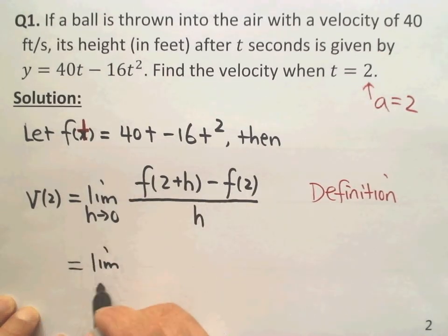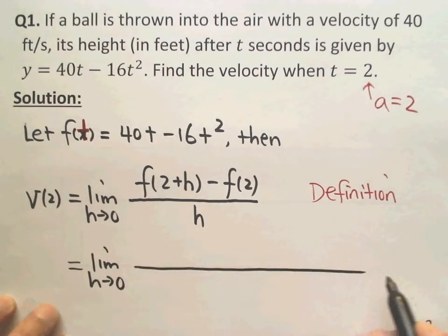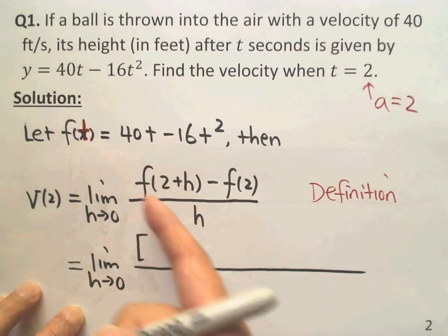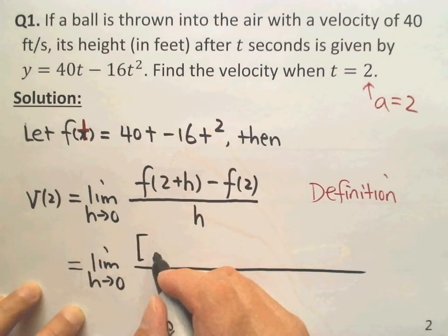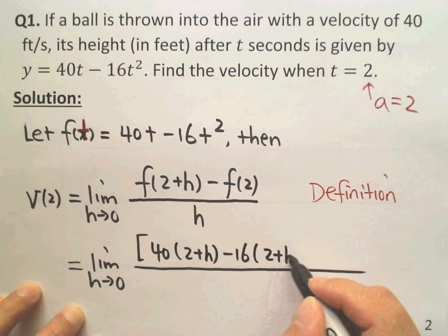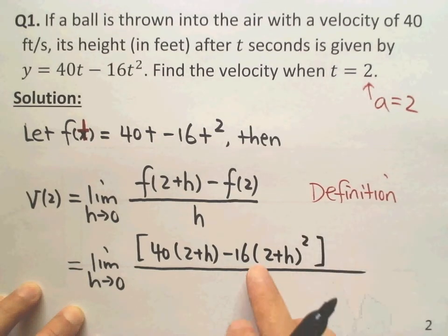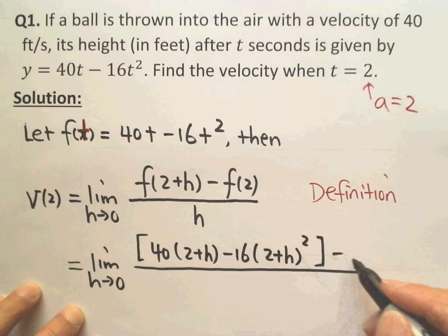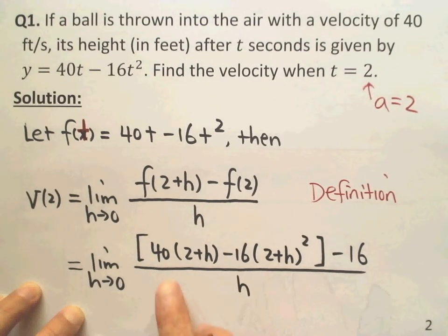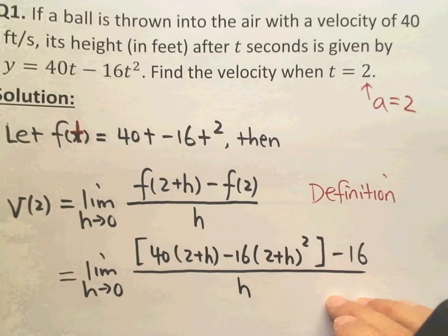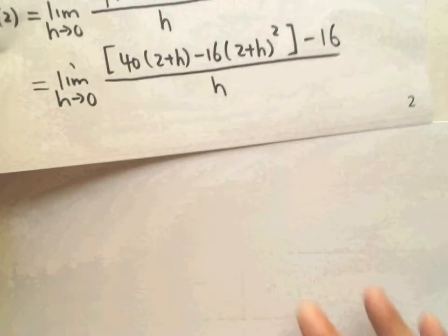Now we need to plug in f and simplify everything. We evaluate f(2+h) by replacing t with 2+h, giving 40(2+h) - 16(2+h)². This is the first term. Then we subtract f(2). Computing f(2) directly gives 64. So the expression simplifies to a function we need to expand and simplify.